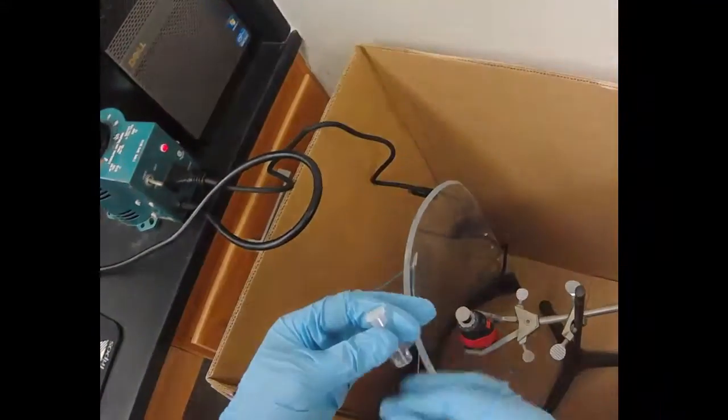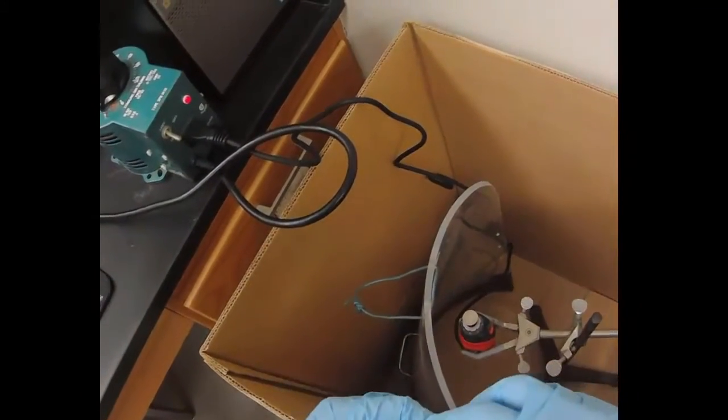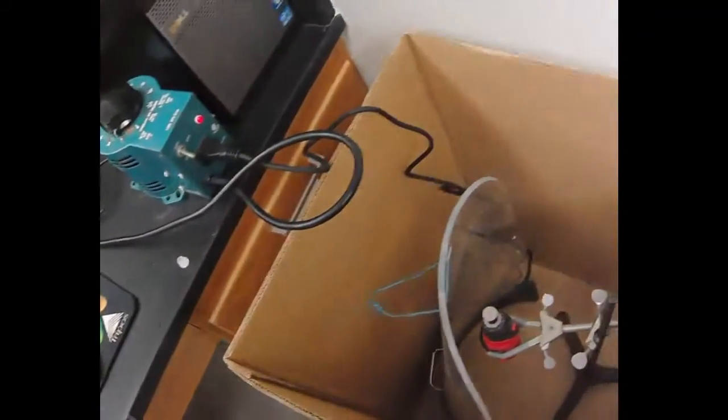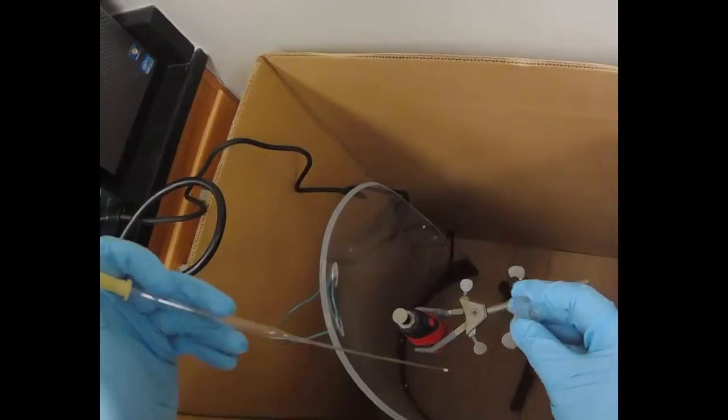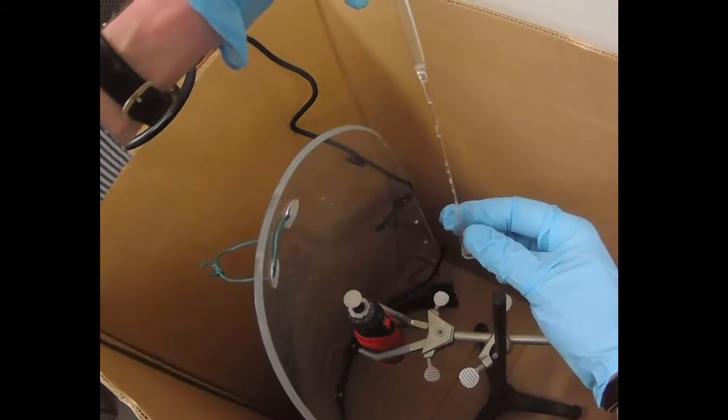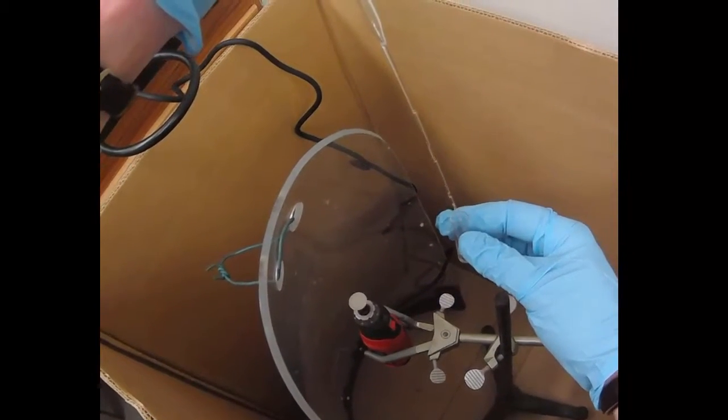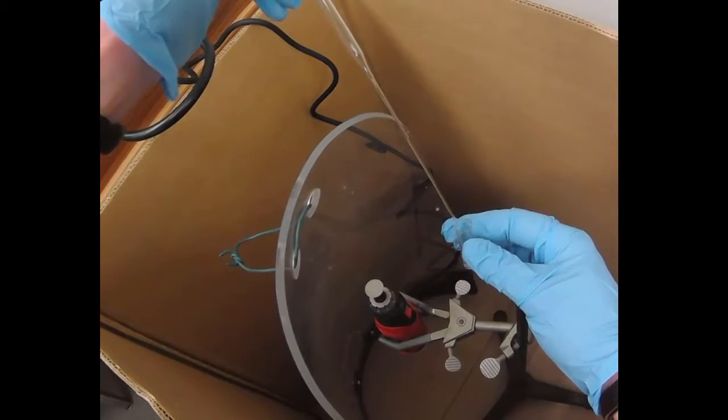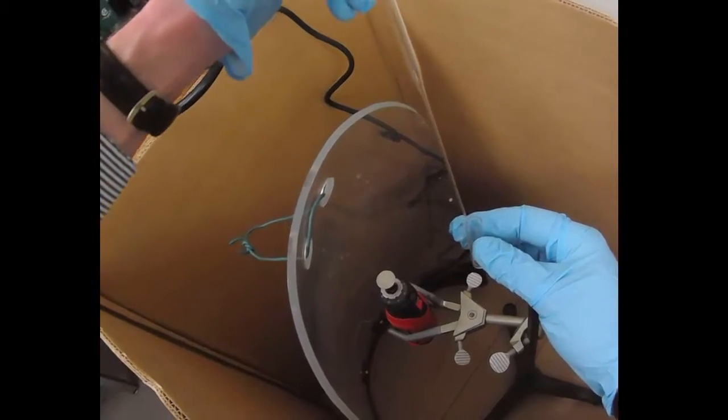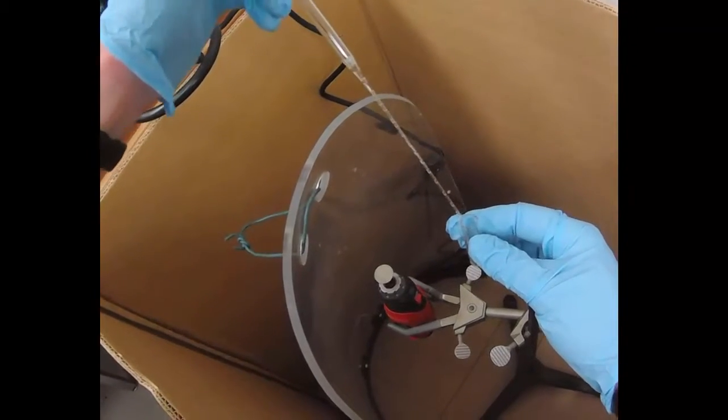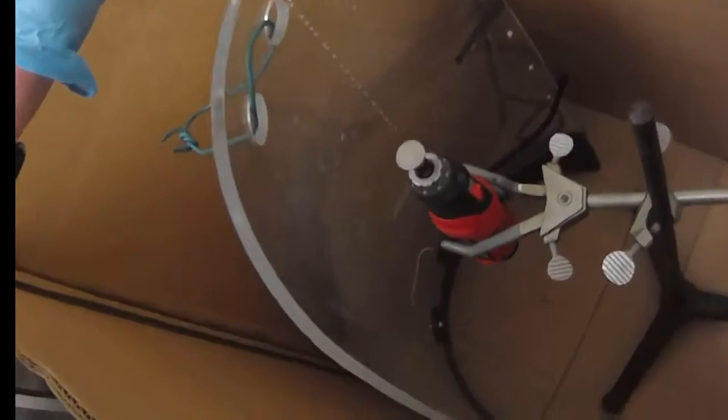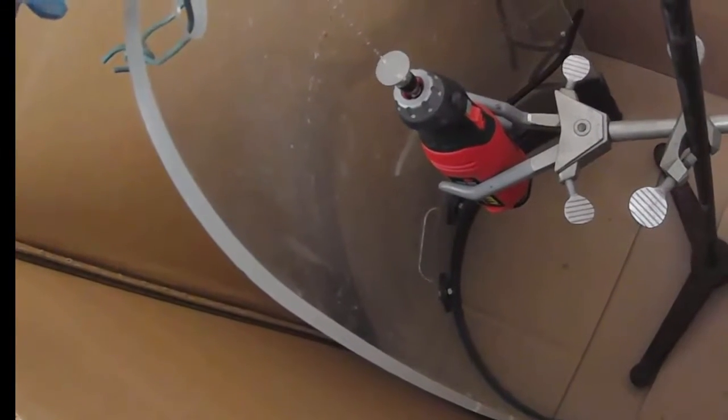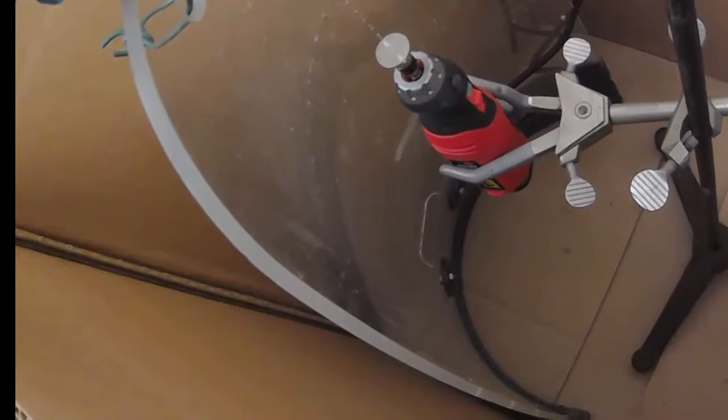Now we take our solution with our polymer in it. And we're going to place a few drops into the center of the spinning disc. So we don't want to touch the glass. Just add a couple drops to the center.